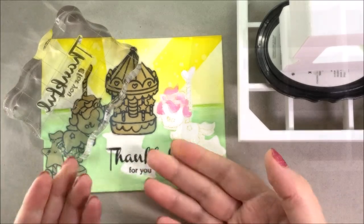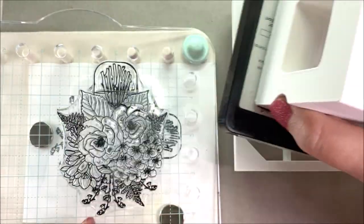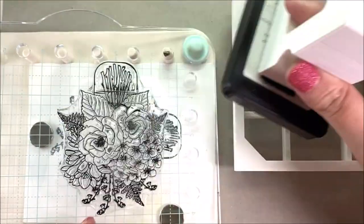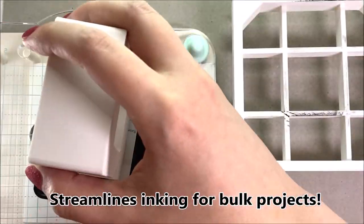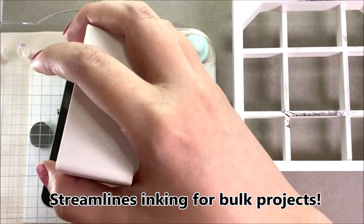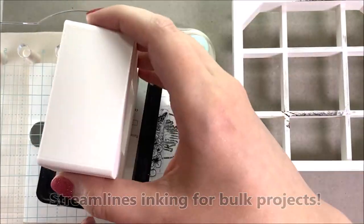Now remember the example of the rotisserie chicken, right? We can never forget that. Look at this. I'm inking, I'm inking. I'm going back and forth, and just imagine this was like a stamp positioner where the hinge door and you close it, close it. My wrist is not rotating at all.